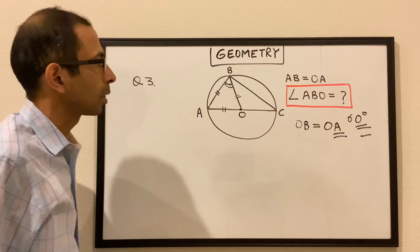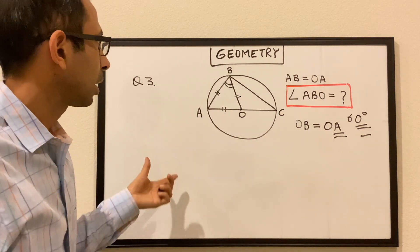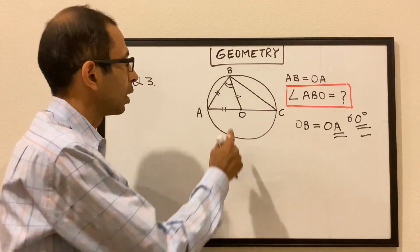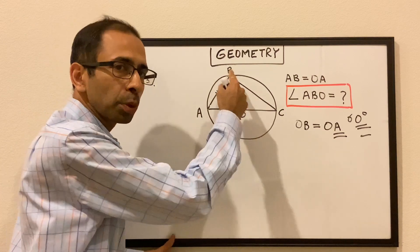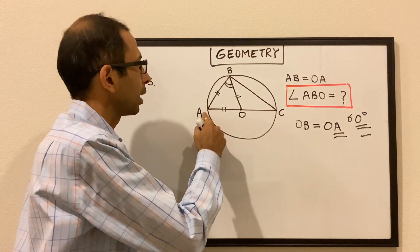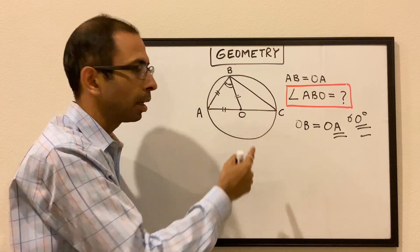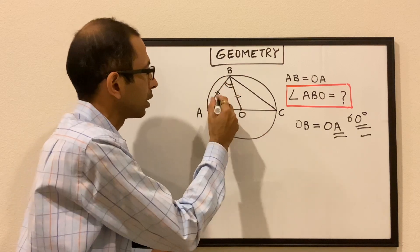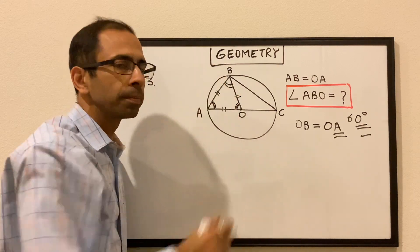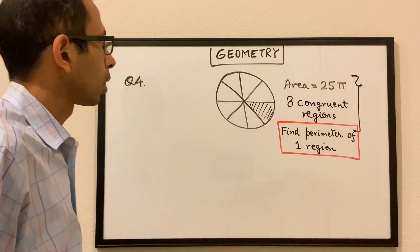There could be other ways of approaching this, but the easiest and fastest is to look from a radius perspective, which gives us that triangle ABO is an equilateral triangle and each of its angles is 60 degrees.